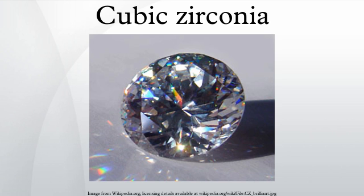Cubic zirconia has no cleavage and exhibits a conchoidal fracture. Because of its high hardness, it is generally considered brittle. Under short-wave UV, cubic zirconia typically fluoresces a yellow, greenish yellow or beige. Under long-wave UV the effect is greatly diminished, with a whitish glow sometimes being seen.